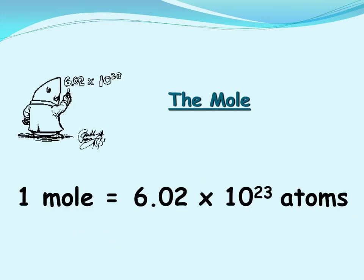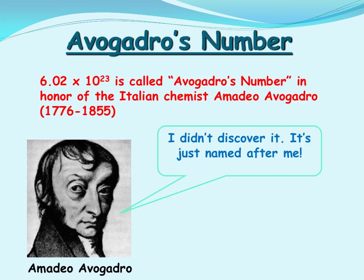We will use the number of the mole, 6.02 times 10 to the 23rd, as a conversion factor. 6.02 times 10 to the 23rd atoms is equal to one mole of a substance. We call this Avogadro's number.